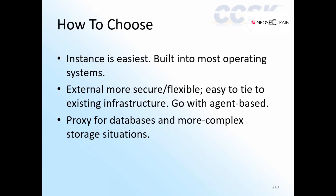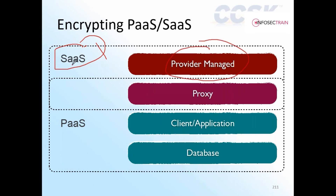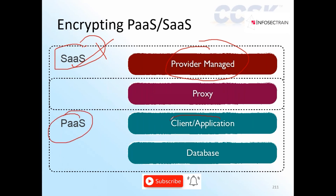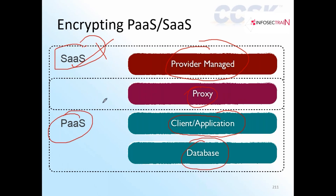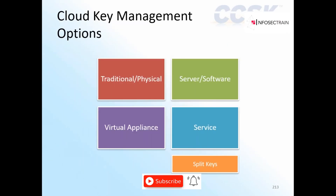In the SaaS platform, encryption is in almost all cases provider-managed — you don't have access to manage it. On the PaaS side, you can choose between client-side encryption, application-level encryption, database encryption, or proxy-based encryption. Proxy-based models encrypt or mask data, and this applies to both SaaS and PaaS platforms.